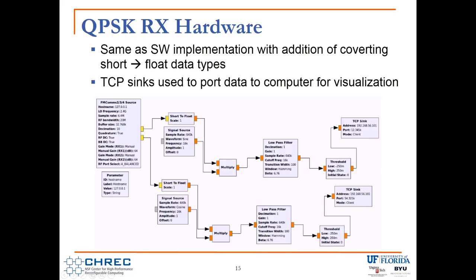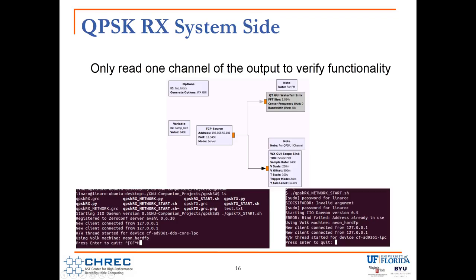On the hardware reception side, I take the output data and decimate by a factor of 10 to keep everything consistent. All processing is done in floating point with conversion as needed. The signal is then multiplied by the same source sinusoids, filtered, and prepared for display. Because the Z-Board is a headless device, I used TCP sinks and connected one Z-Board to my computer via Ethernet, then ran a separate GNU Radio script on the computer to connect to those TCP sinks and visualize the data there.